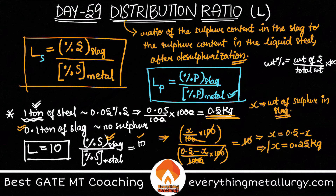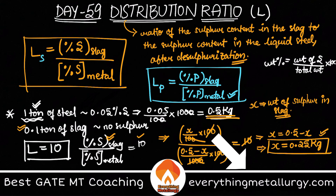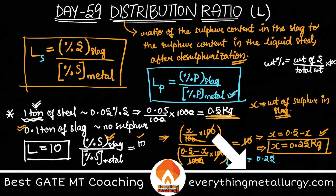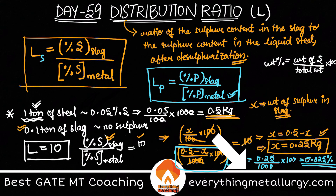So out of the initial 0.5 kg of sulfur in the steel, 0.25 kg goes into the slag. The remaining sulfur in the steel is 0.5 minus 0.25, which equals 0.25 kg. The final percentage of sulfur in the metal is 0.25 divided by 1000 multiplied by 100, which equals 0.025%. That is the answer the question asks for.